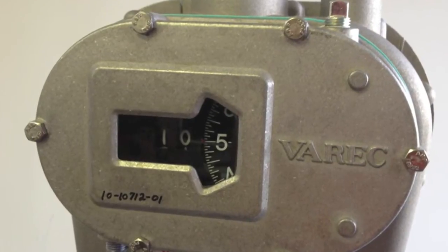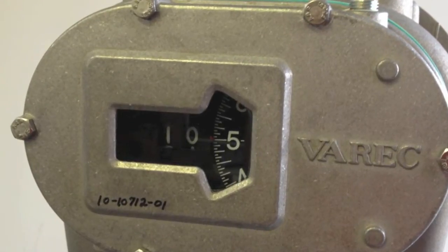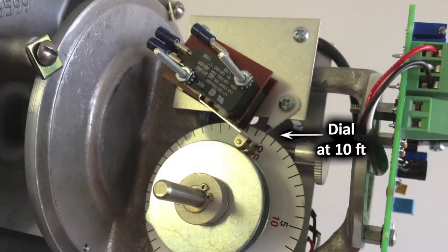You will need to know your level reading of the gauge. Ours is 10 feet and 5 inches, but the transmitter dial only reads 10 feet.